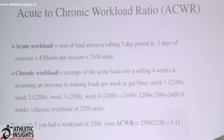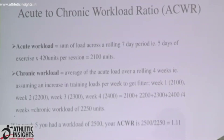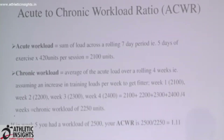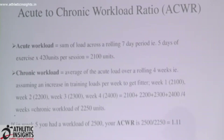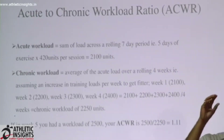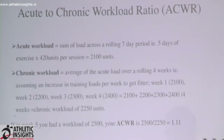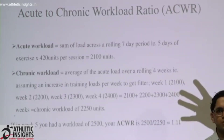Say in week 1 you did 1,000 units, week 2 you did 1,000 units, week 3 you did 1,000 units, and week 4 you did 1,000 units. Your average for 4 weeks becomes 1,000 units — that's your chronic workload. The ratio of the work you did in one week to the work you've done in the last 4 weeks becomes your acute to chronic workload ratio.